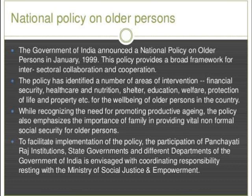In the year 1999, the Government of India announced a National Policy for Older Persons. This policy provides a broad framework for intersectoral collaboration and cooperation, and has identified key areas representing the major needs of an elderly person: financial security, healthcare, nutrition, shelter, education, welfare, and protection of life and property. The policy also stresses on the importance of the role of family in providing non-formal social security for older persons.